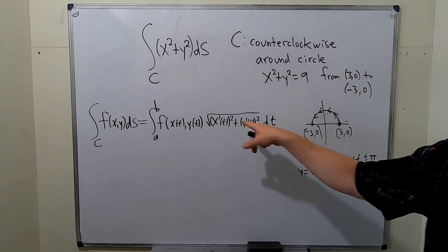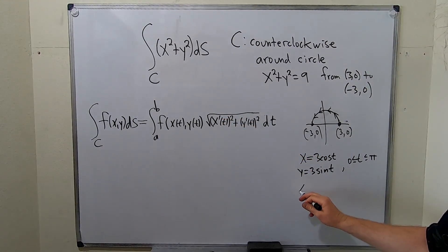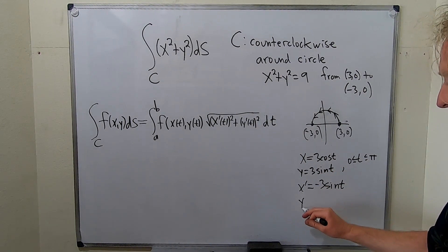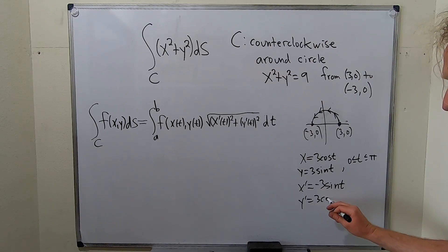Okay. Now we need the derivatives as well, so let's go ahead and compute those. So x prime, the derivative of cosine is negative sine. This is negative 3 sine t. And the derivative of sine is cosine, so this is 3 cosine t. Good stuff.